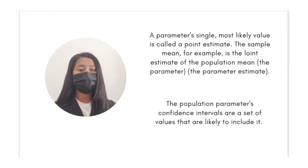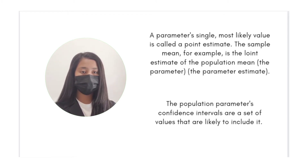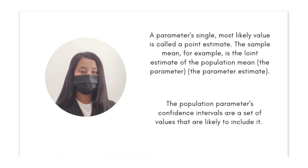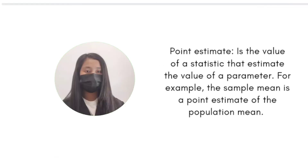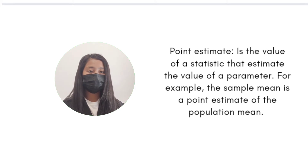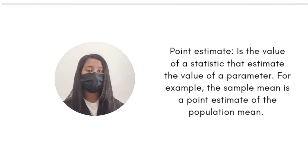A parameter's single, most likely value is called a point estimate. The sample mean, for example, is the point estimate of the population mean. The population parameter's confidence intervals are a set of values that are likely to include it. A point estimate is the value of a statistic that estimates the value of a parameter — for example, the sample mean is a point estimate of the population mean.